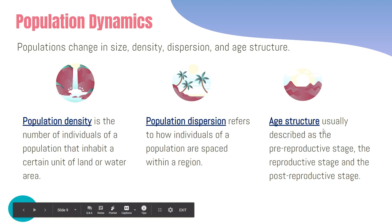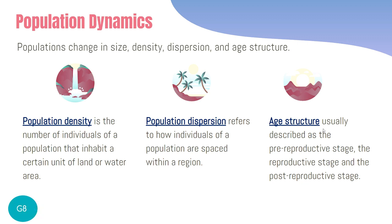The last population factor is age structure, which groups the population into three stages based on reproductive status. Pre-reproductive stage: members who cannot reproduce yet — children, babies, and young ones. Reproductive stage: those who can already reproduce — young adults. Post-reproductive stage: those who cannot reproduce anymore, such as the elderly and post-menopausal females.